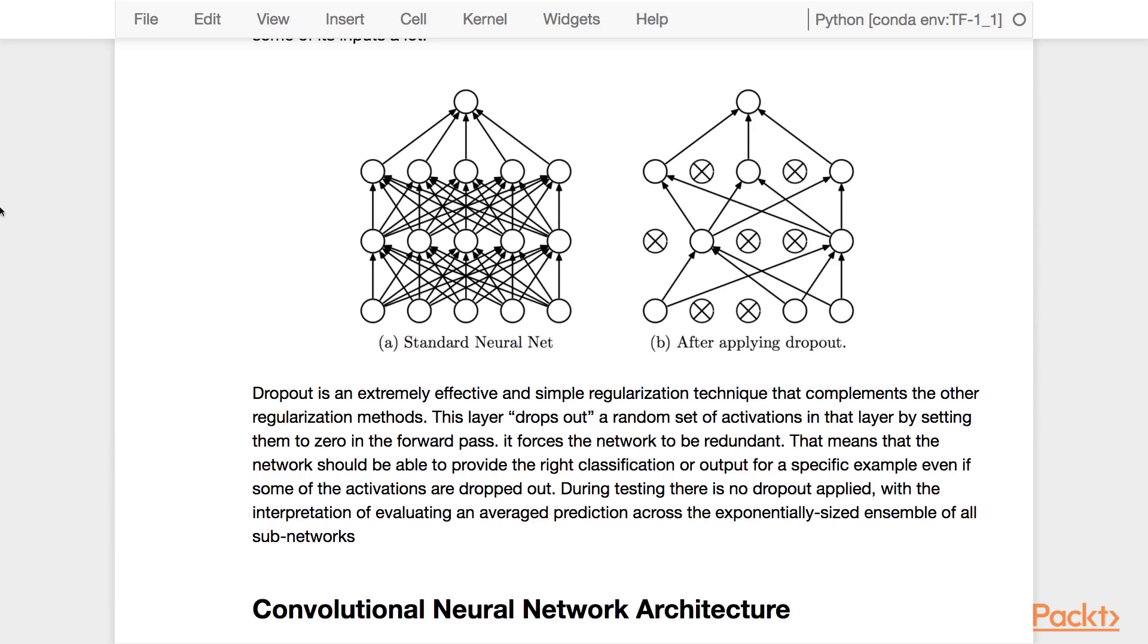During testing, there is no dropout, with the interpretation of evaluating an average prediction across the exponentially sized ensemble of all the sub-networks.